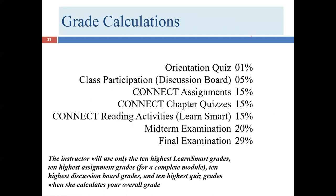Here's the grade breakdown, which you'll also find on the syllabus. The orientation quiz is worth 1% of your grade. You can take it three times, and your highest grade is what we keep — but you have to score a 90 or above. If you score an 89 or below, you get a zero. The orientation quiz is not hard; there is no reason any of you should not have 100 on this. Maybe not 100 on the first try, but certainly by the second or third. If you've taken it twice and still can't get the answers right, contact me and we'll work through it.